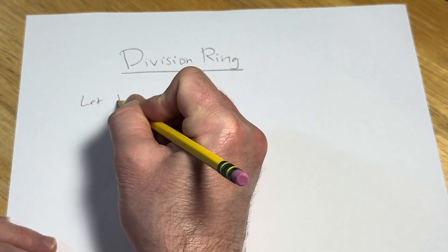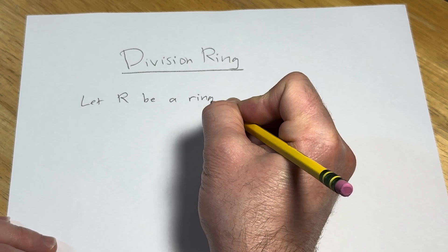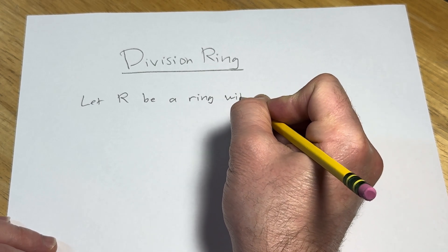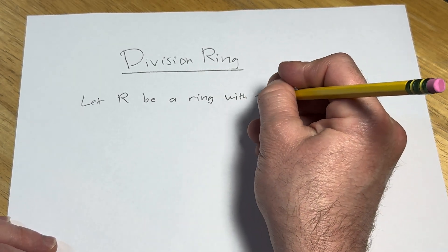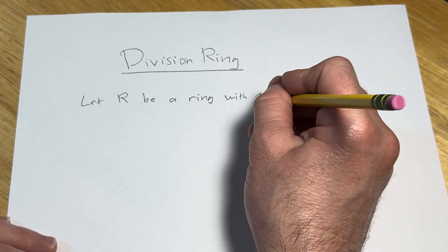Let R be a ring with 1, or with unity, or with unit. This is the multiplicative identity for multiplication.